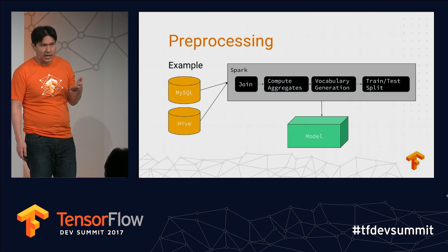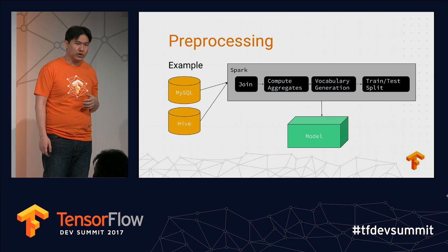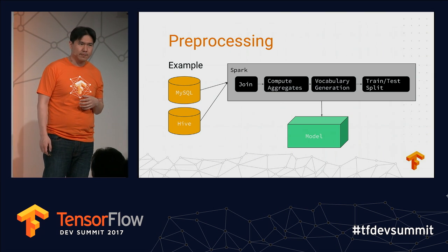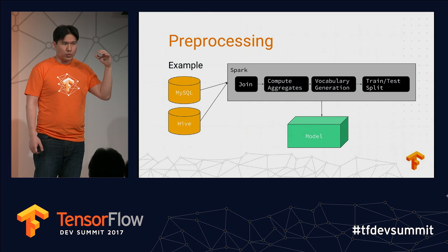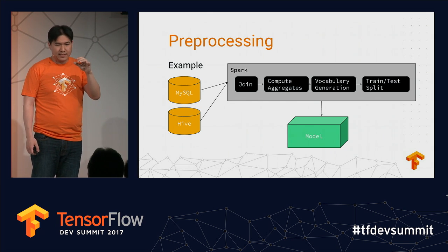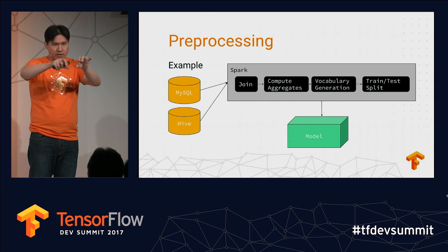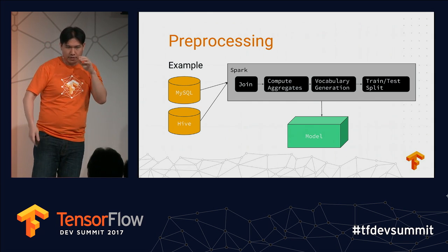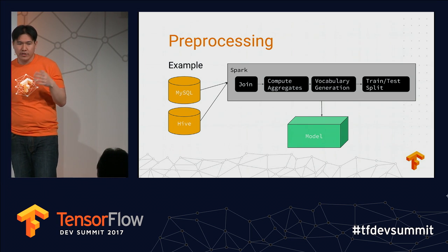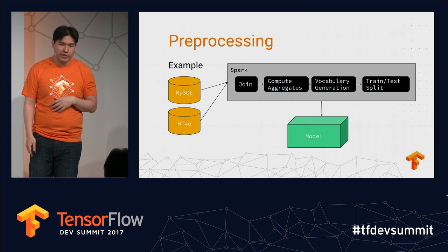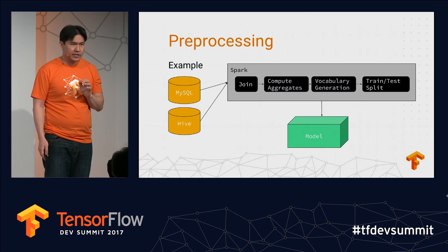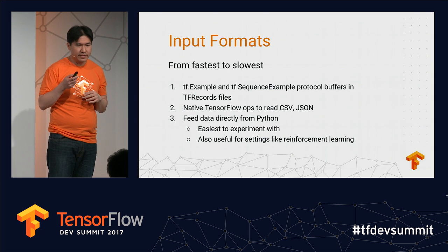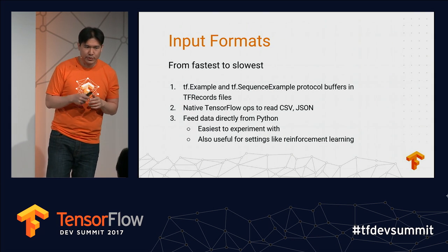You compute aggregates like user data per region. Often you'll do vocabulary generation, particularly if you're using embeddings. Vocabulary generation essentially means mapping from words to IDs, and the IDs map to an embedding layer. After that, you'll typically have a training-test split, and you'll output to a file format that TensorFlow understands.